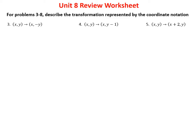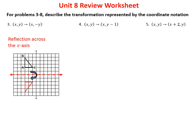Problems three through eight ask us to describe the transformation represented by the coordinate notation. In the first one, (x, y) becomes (x, −y). The x stays the same, but the y flips. On a graph, this is what happens when you cross the x-axis — point A at (−1, −3) maps to A prime where only the y flips across the x-axis.